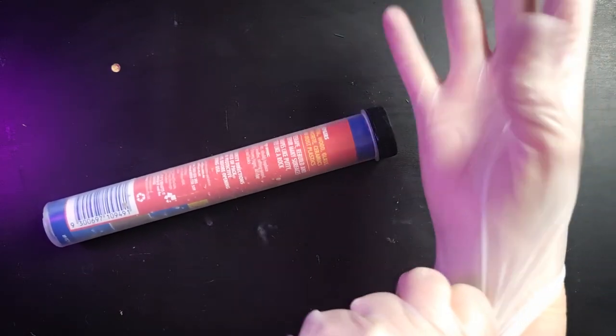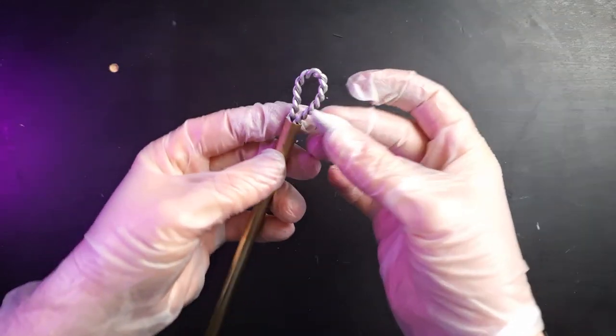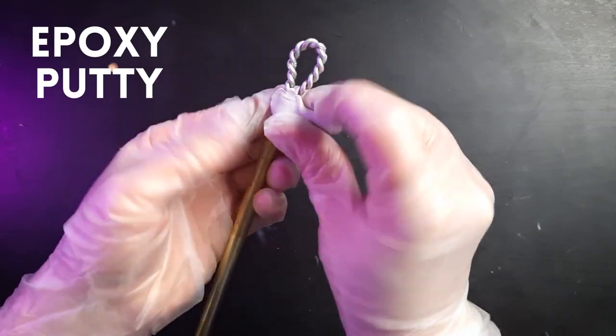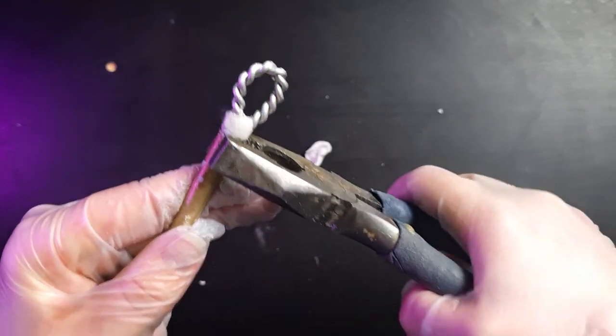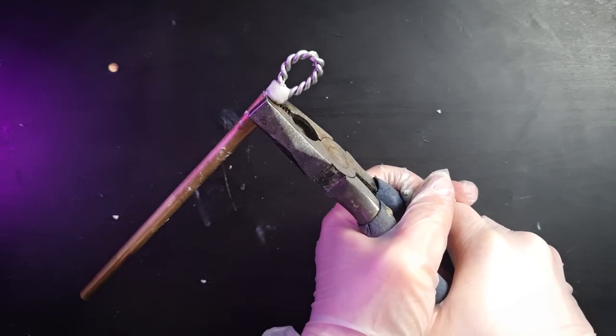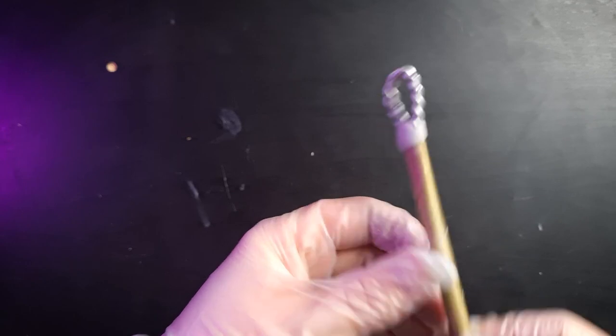To make sure the head of the tool stays in place I mix a bit of steel kneaded or epoxy putty and fill the cavity at the end. Then I use my pliers to squeeze the end shut before leaving the putty to fully set. After 10 minutes the putty is cured and our loop tool is complete.